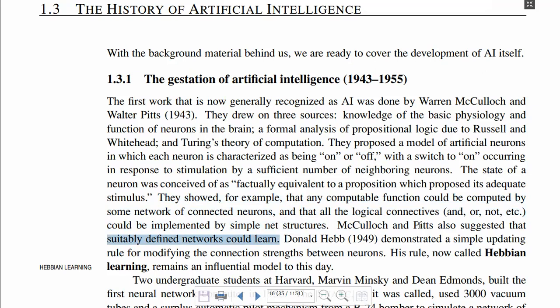Later, in 1949, Donald presented a simple updating rule by which the strengths of neurons could be modified. By adjusting the strengths of the connections by which a neuron is connected with other neurons, they can learn. The rule presented by Donald is known as Hebbian learning, and still this rule is influential and it is the base of further study in neural networks.